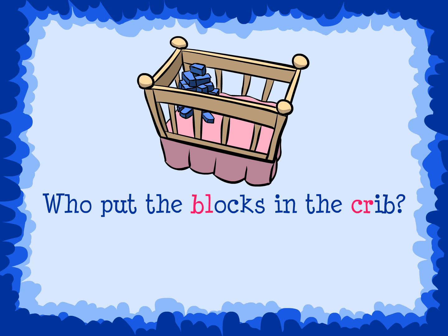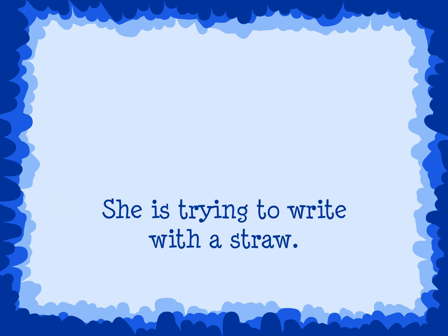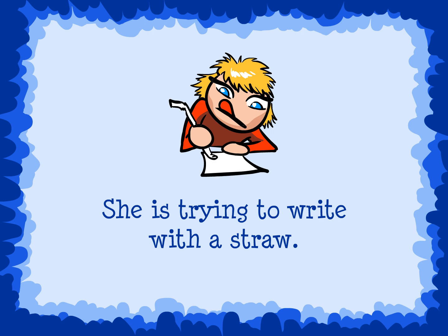Try to find the blend in the following sentence: She is trying to write with a straw. The blends are TR in 'trying,' WR in 'write,' and ST in 'straw.'